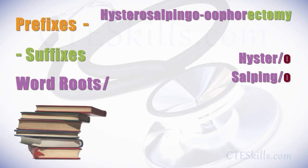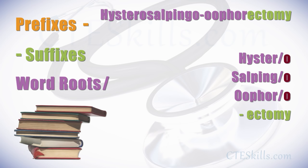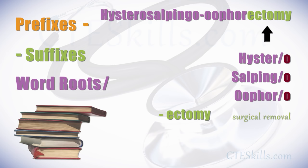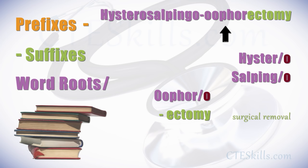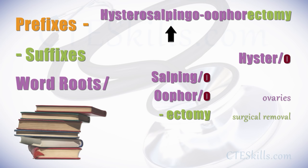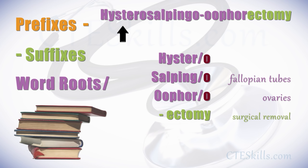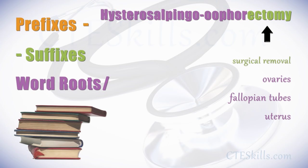What does hysterosalpingo-oophorectomy mean? Let's follow the formula provided earlier and break down the term into its elements — prefixes, suffixes, and word roots. Here's the breakdown, beginning from the right and moving to the left: '-ectomy' means surgical removal; 'oophoro' is a root word for ovaries; 'salpingo' is a root word for fallopian tubes; and 'hystero' is a root word for uterus. Reading from right to left: surgical removal of the ovaries, fallopian tubes, and uterus.